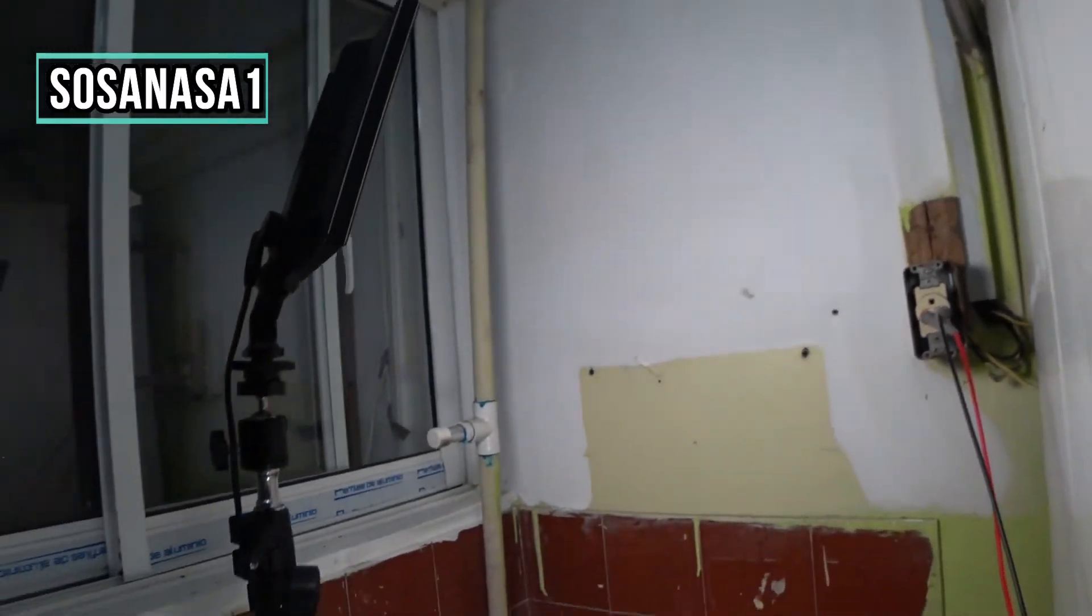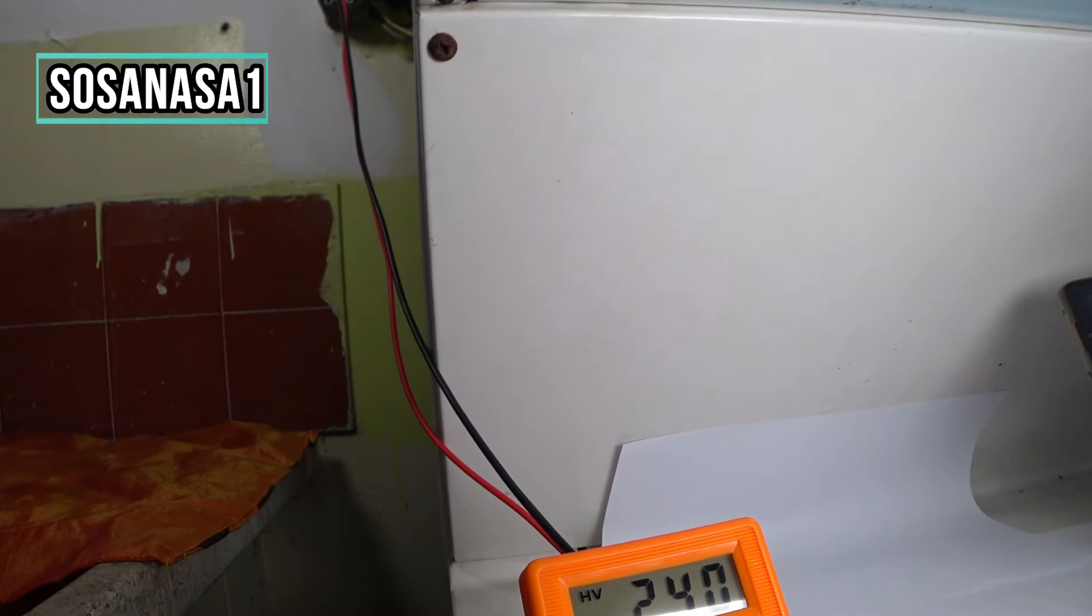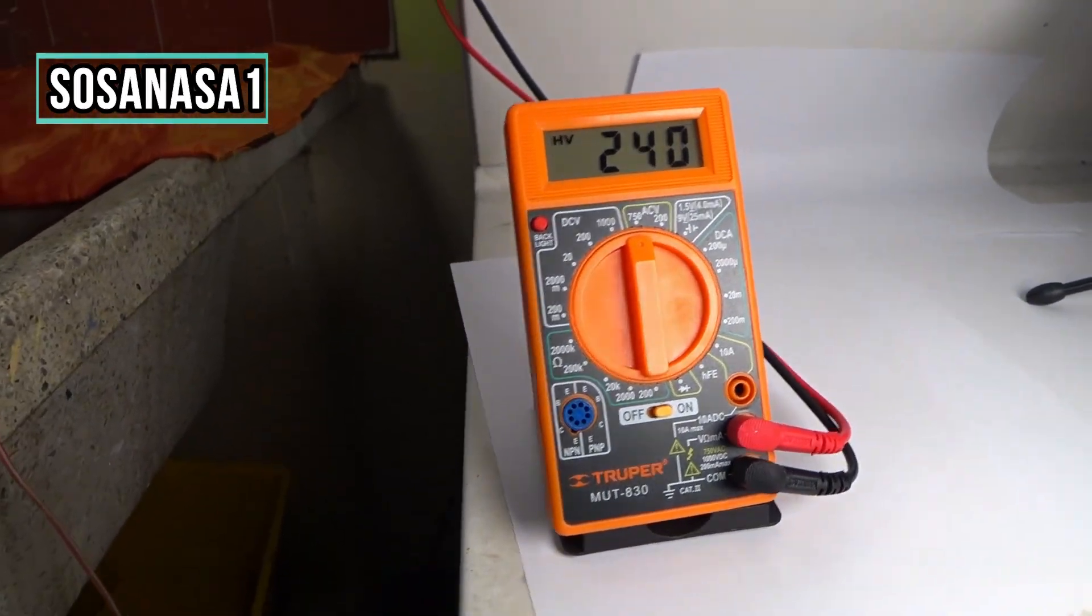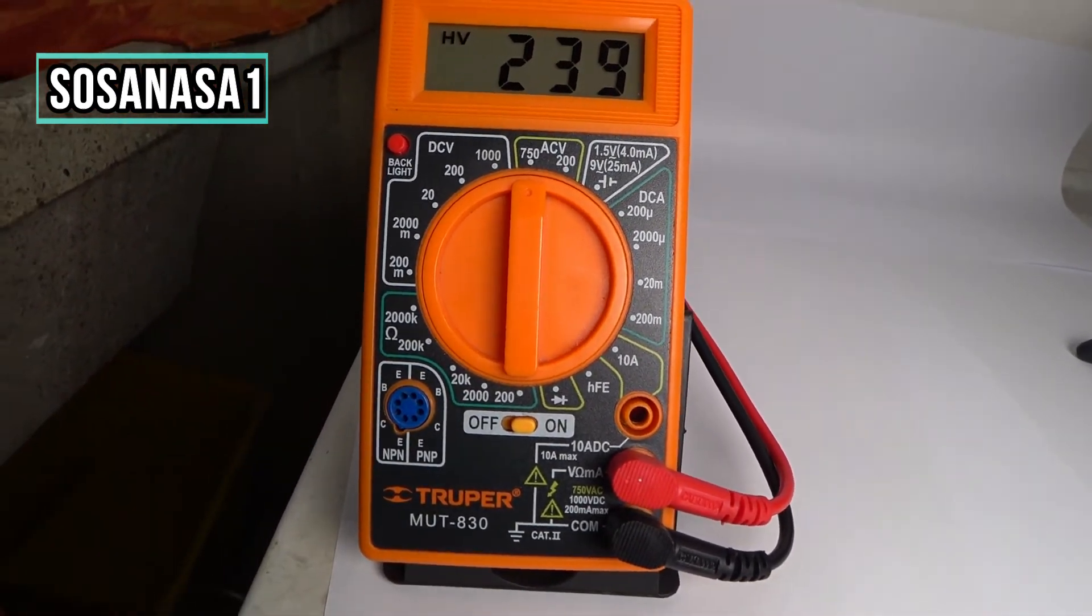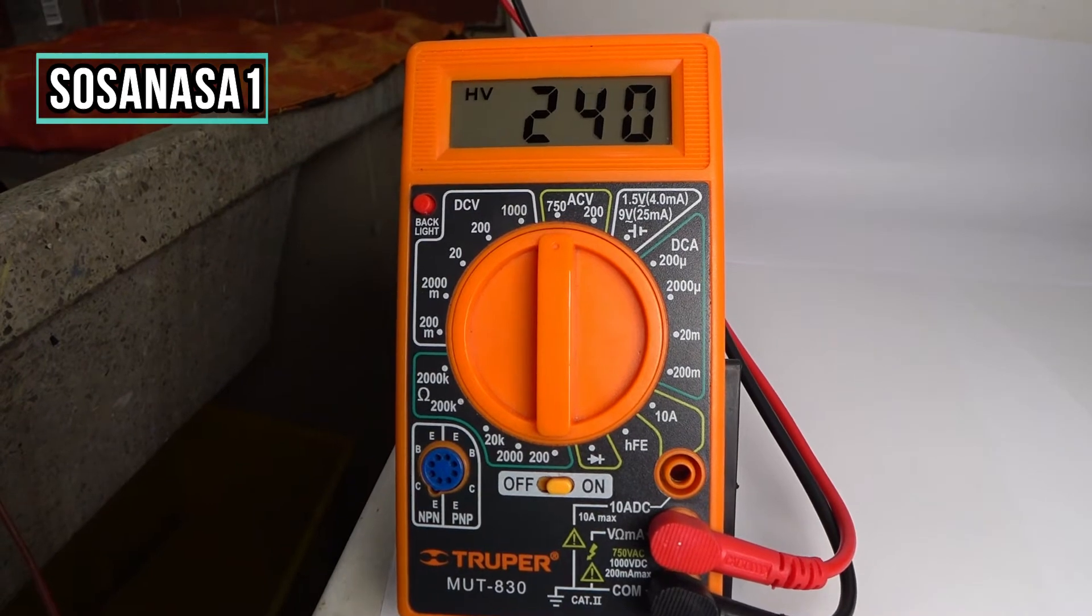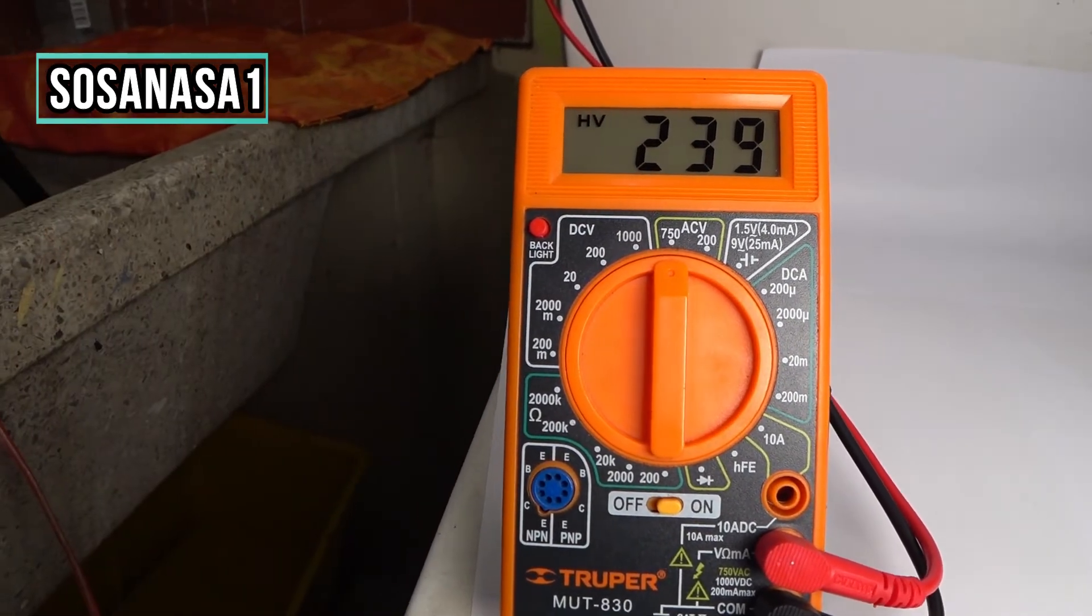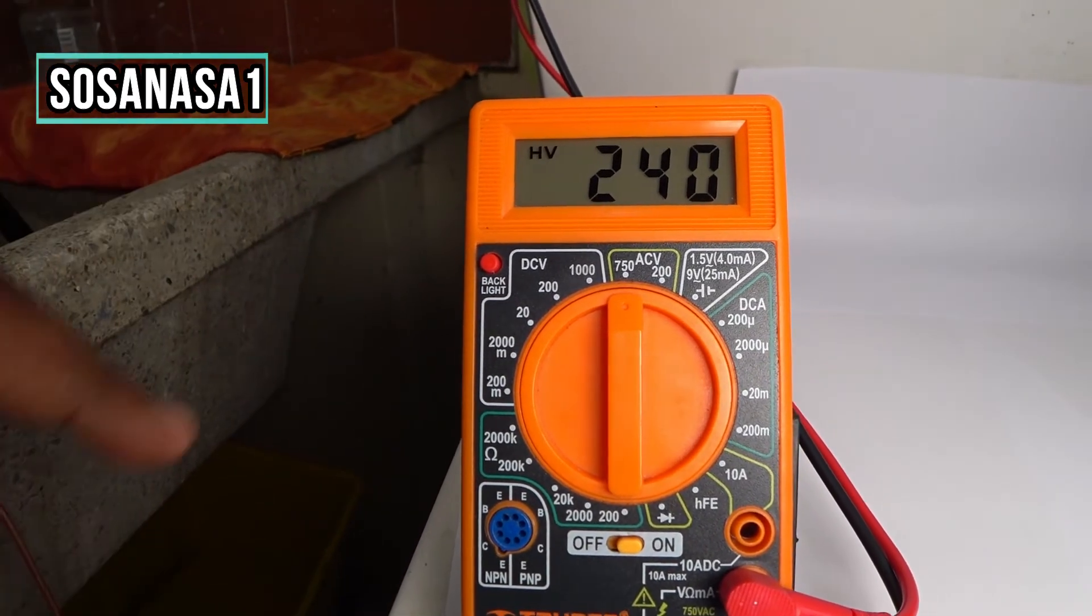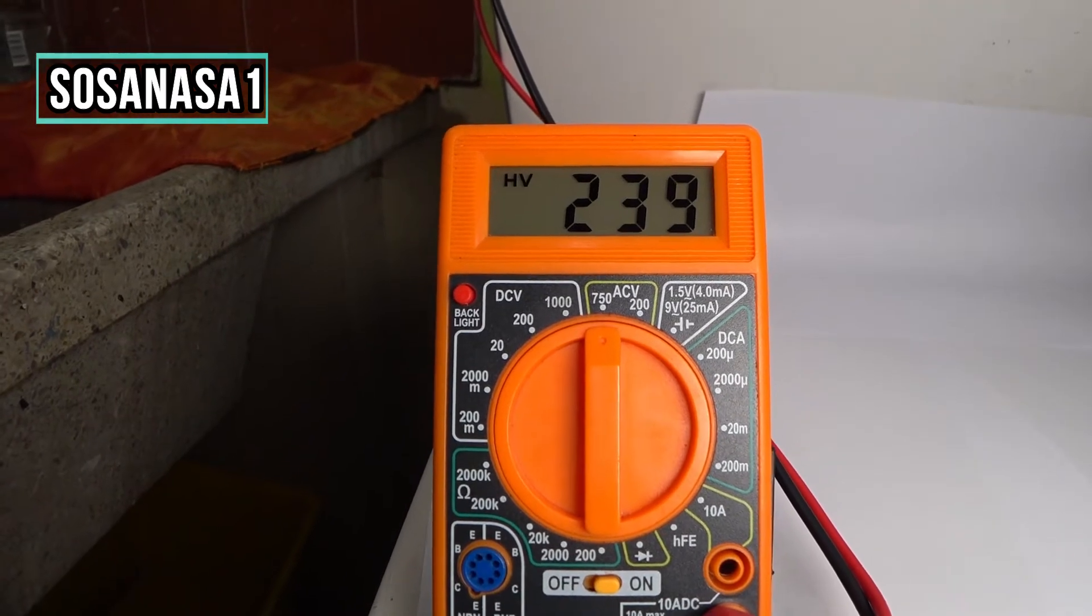Now let's watch again our digital multimeter. As we are watching now, the voltage on the multimeter screen is 240, 240 volts or 239 volts more or less.